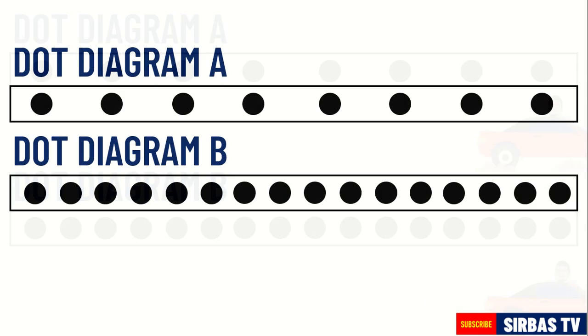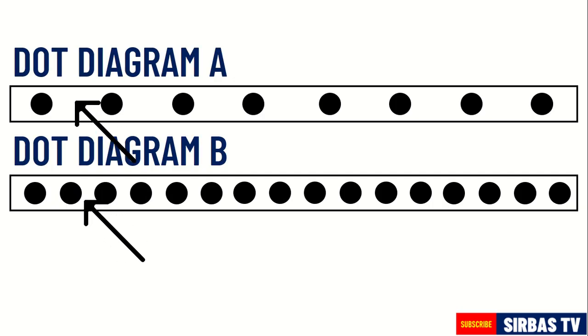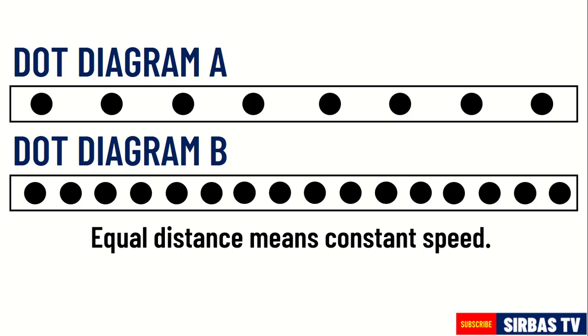Moreover, you can also observe that both the distance of dots on diagram A and diagram B are equal. This means that the objects in diagram A and diagram B are moving with constant speed or velocity. This also means that there is no acceleration on the movement of the two objects.